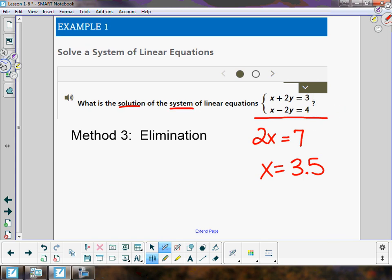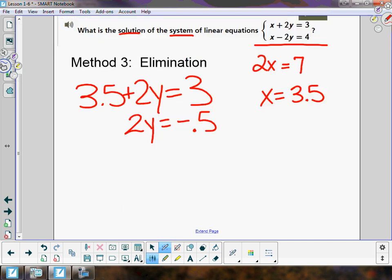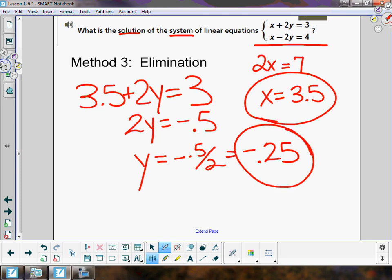We're going to take this answer, plug it into the first equation for x, and then solve for y. I'm going to take away 3.5 from both sides, which gives me -0.5. Then I'm going to divide both sides by 2. If I take -0.5 divided by 2, I'm going to get -0.25. 3.5, -0.25. That is the solution to that system.